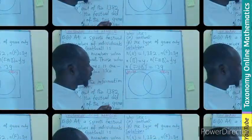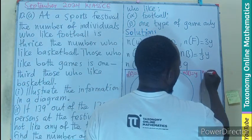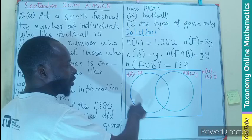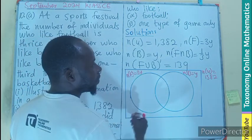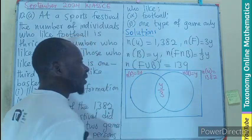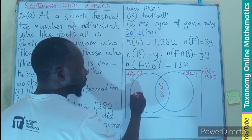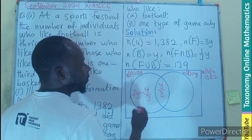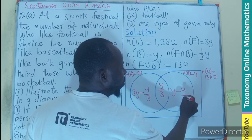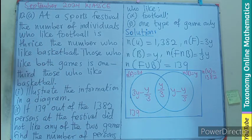So let's draw the diagram. Football is here, then we have basketball. The universal set is 1382. The whole football circle represents 3y, and the intersection is y/3. So the football-only region will be 3y minus y/3. Similarly, the whole basketball circle is y, so the basketball-only region is y minus y/3. The complement is 139.